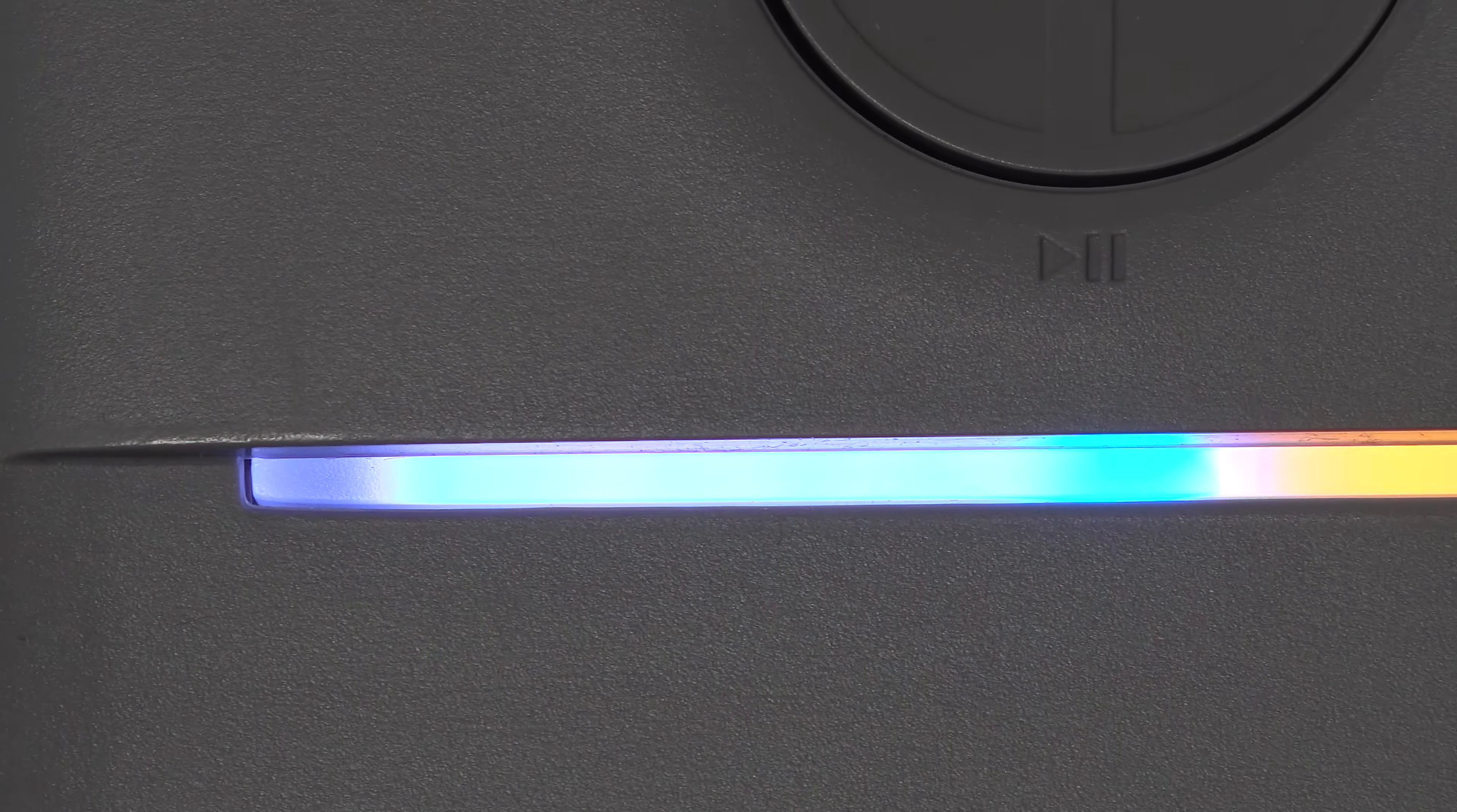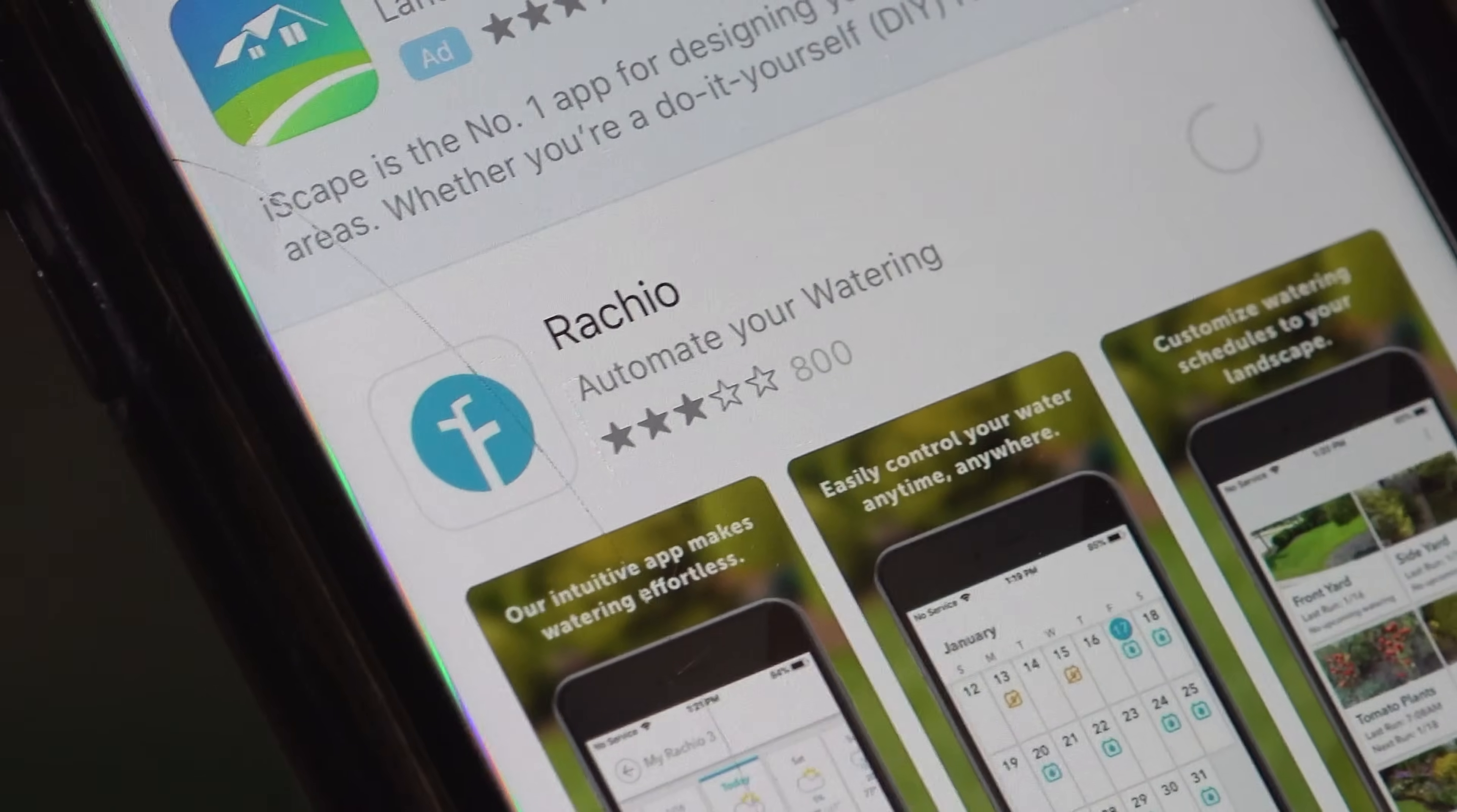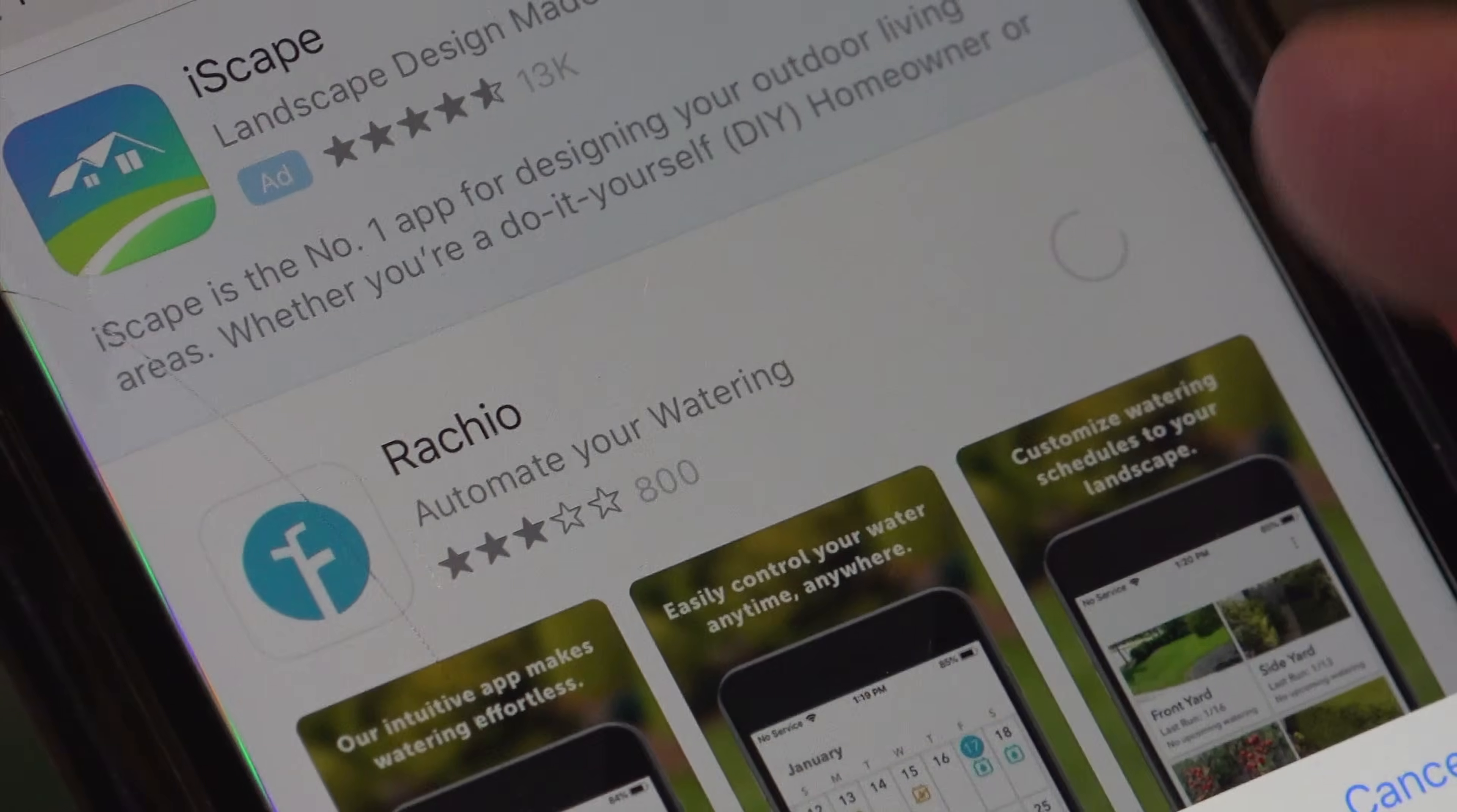Now this is where things get really easy. As this thing's powering up it's going to light up all types of different colors but all you need to do is go to your app store on your phone or your iPad and get the Rachio app.